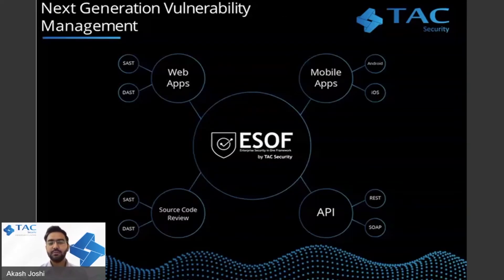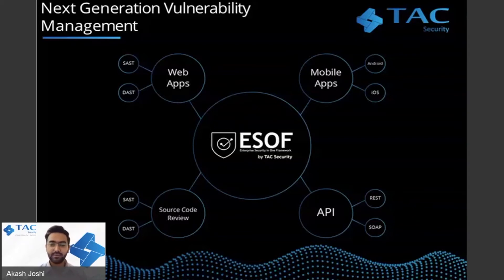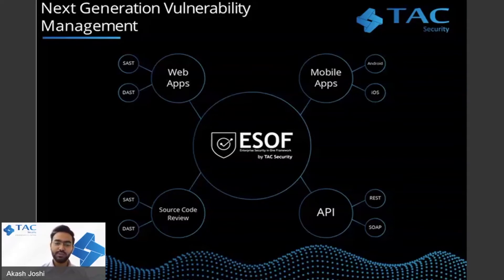Everything is under one roof — all assessments across different architecture types: web application, mobile, source code, and APIs. If you want to perform SaaS testing, or Android or iOS application automated testing, you can perform everything within ESOF itself. Instead of using different vulnerability assessment tools, you can use ESOF and get all these different sorts of assessments done by one platform.